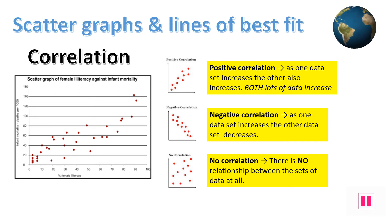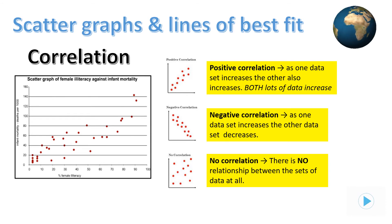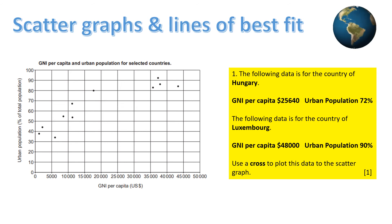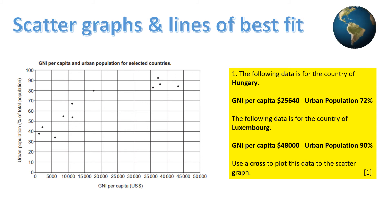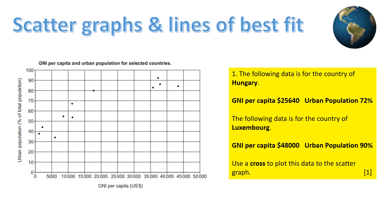Pause the show and make sure you understand about correlation — maybe worth writing down the three possible relationships. You've got a typical exam question asking you to complete the scatter graph. Remember, always use a ruler and pencil and double check your answers. First, start to work along the x-axis at the bottom until you come to 25,640.